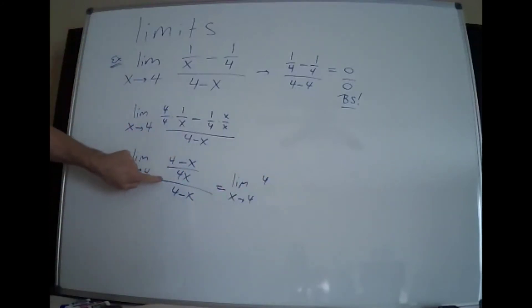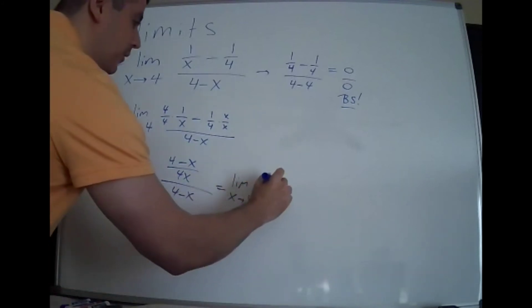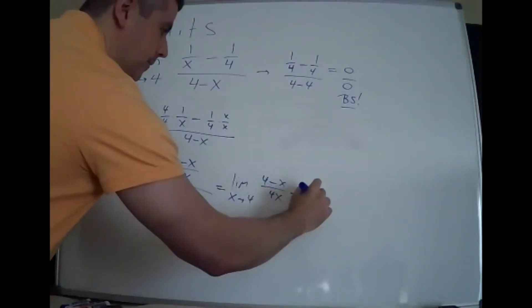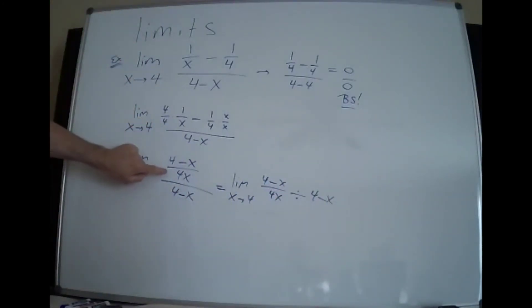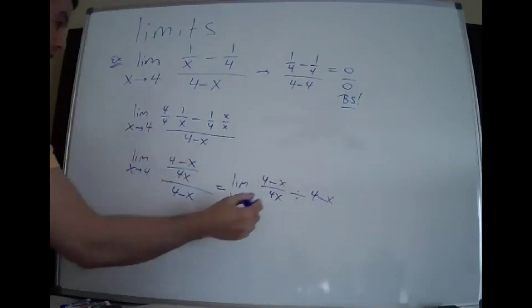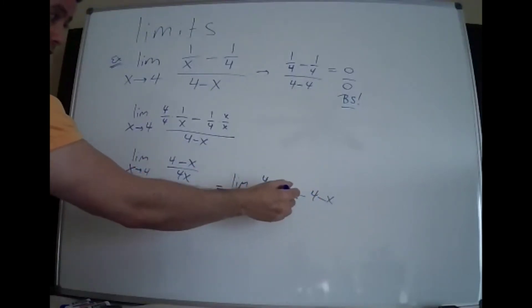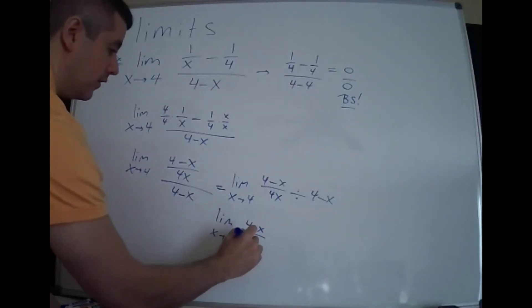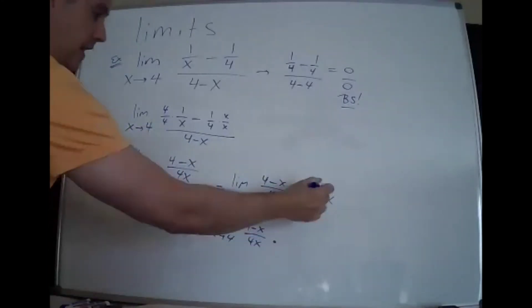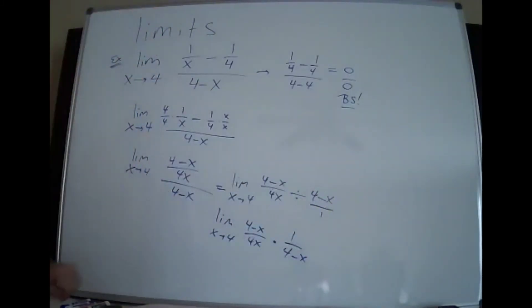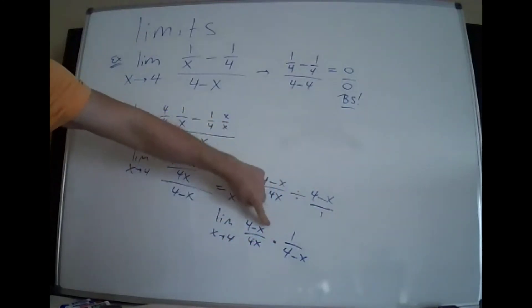On the top you have a fraction divided by the dude on the bottom. You have 4 minus x over 4x divided by the bottom expression. The line means divided by. When you have fractions and you're dividing, you flip — keep, change, flip. The division becomes multiplication and that bottom term flips over. If it helps you, put a 1 there. So keep, change, flip: this switches to multiplication and that flips over.